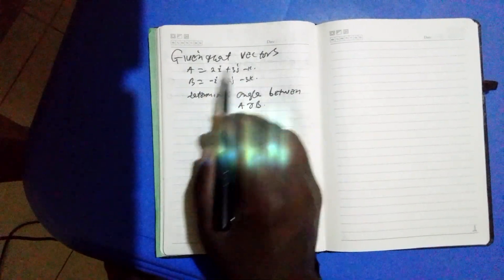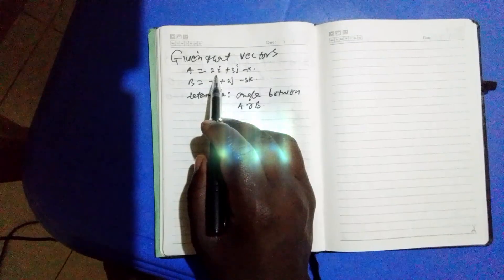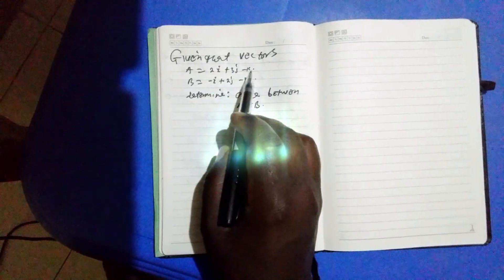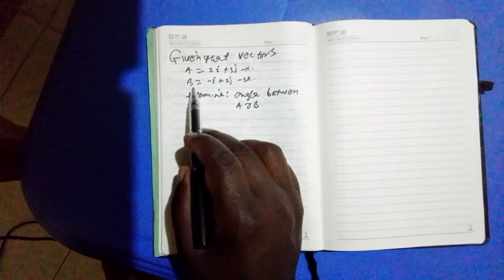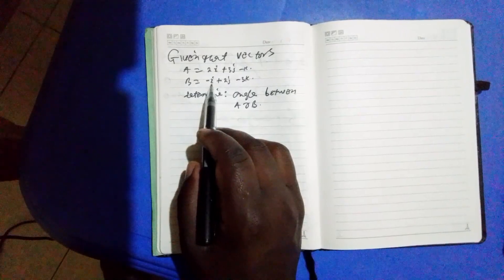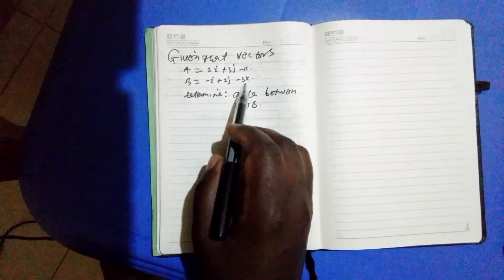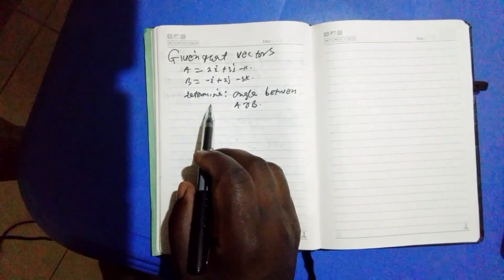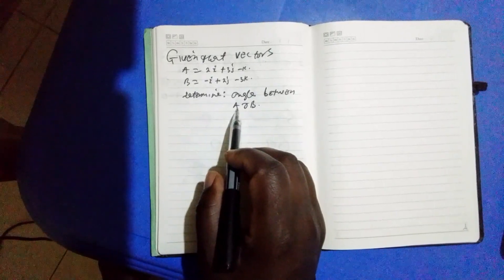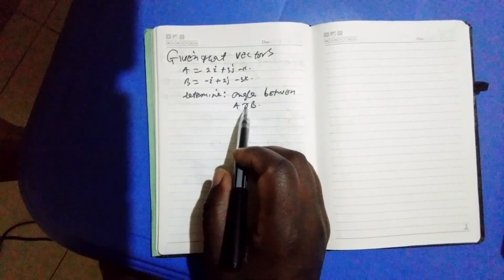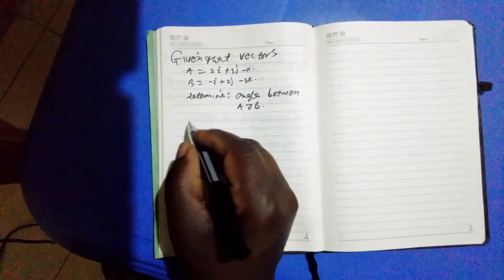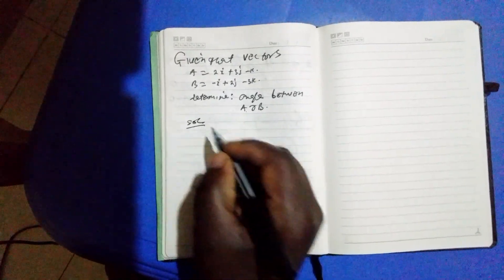Given that the vectors a equals 2i plus 3j minus k, and b equals minus i plus 2j minus 3k, determine the angle between vector a and vector b. Solution: